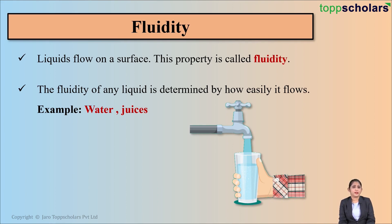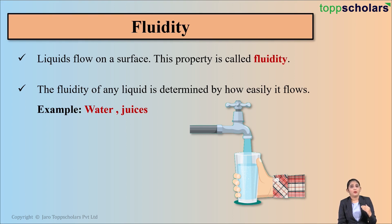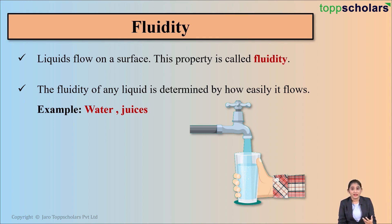If I take a thin metal plate and at three different places add water, honey, and gum, then hold the plate in an inclined position — since liquids have the property of fluidity, that is they flow on a surface, water, honey, and gum all start flowing down the slope. You will notice that water flows very easily as compared to honey and gum. This is the property of fluidity — fluidity of any liquid is determined by how easily it flows.